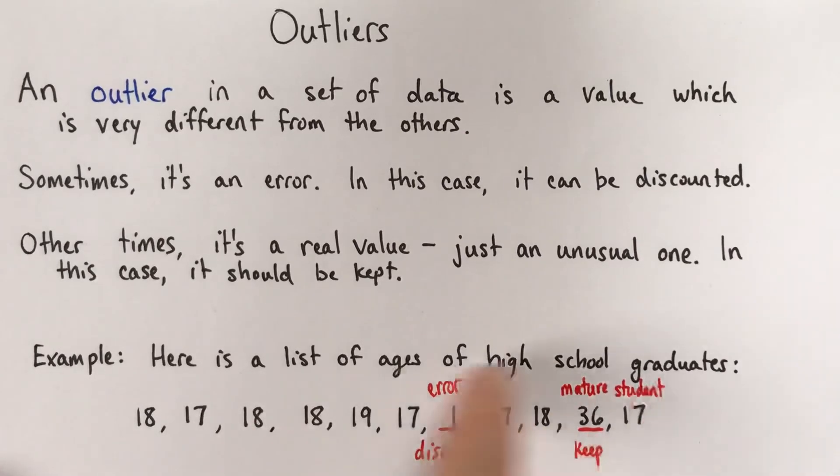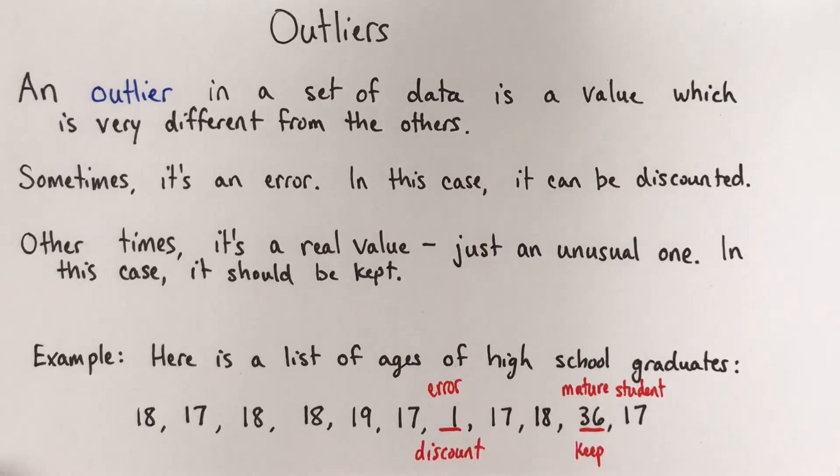Okay. So in this set, it was really quite easy to spot the outliers. I think most people would agree on those two data points being outliers. In other cases, it takes a little bit more judgment to decide, is this value an outlier?